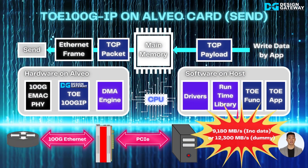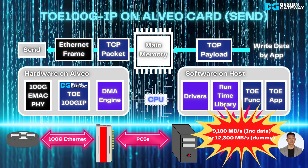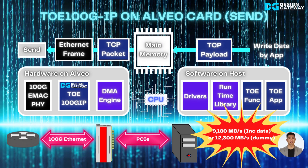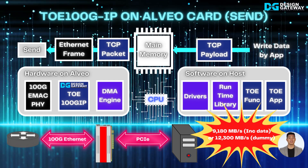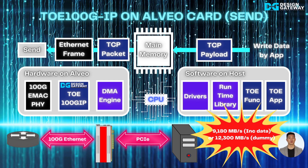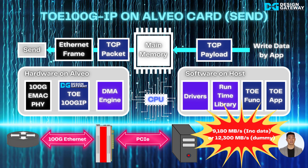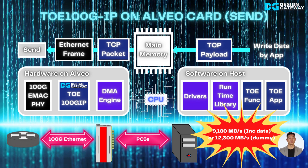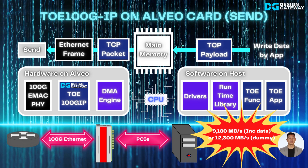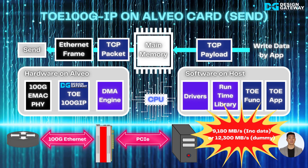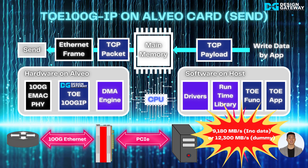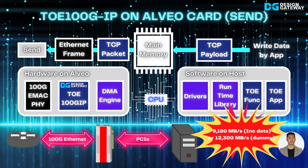Let's see the data flow for the send process in more detail. Firstly, the TOE application generates the data, called TCP payload, and writes it to the main memory. Next, the TOE application sends a request to the DMA engine for transferring the data from the main memory to TOE100G IP via the TOE function. Finally, the TOE application sends a request to TOE100G IP for creating an Ethernet frame that includes the TCP payload data and sending it to the target system.